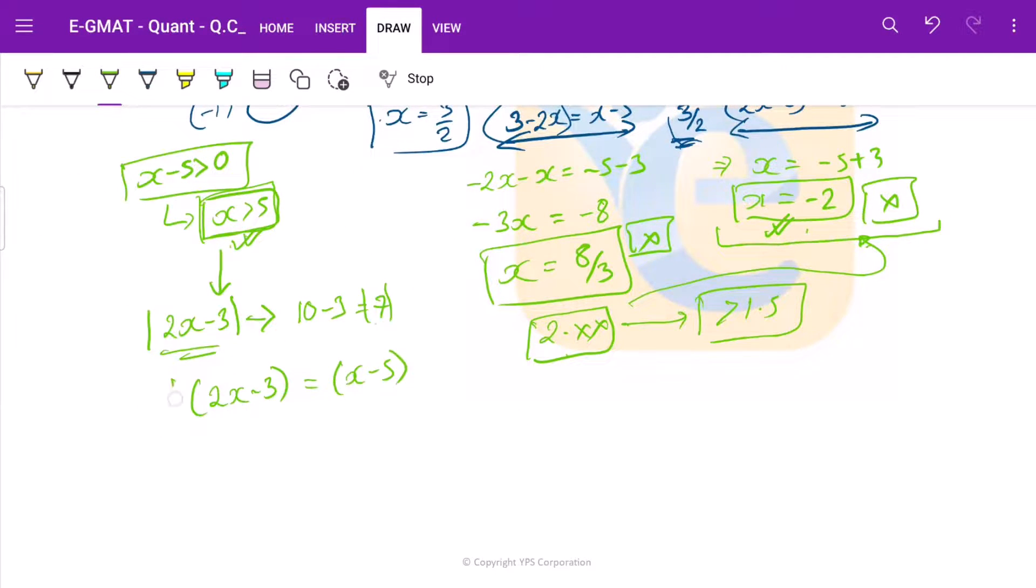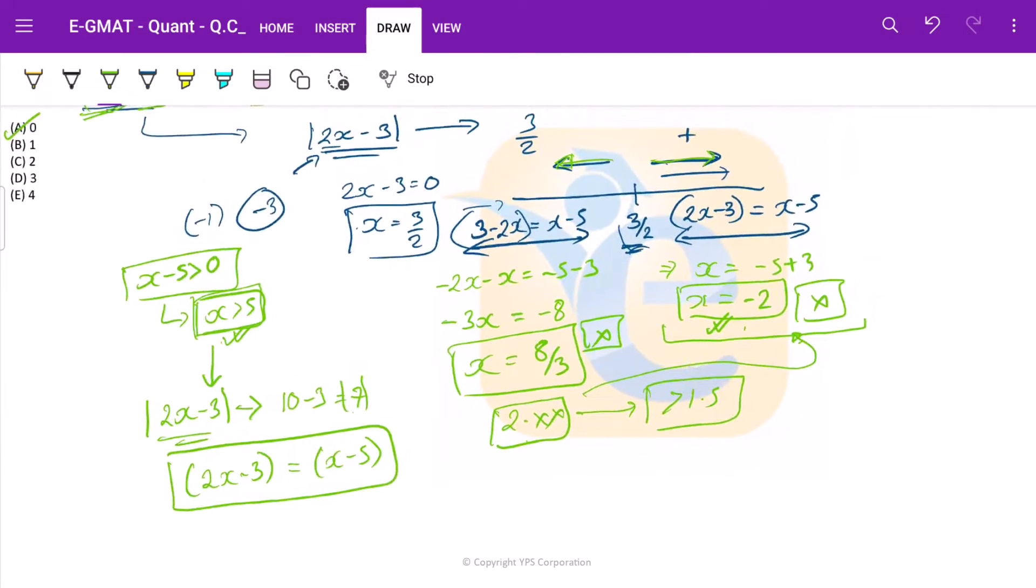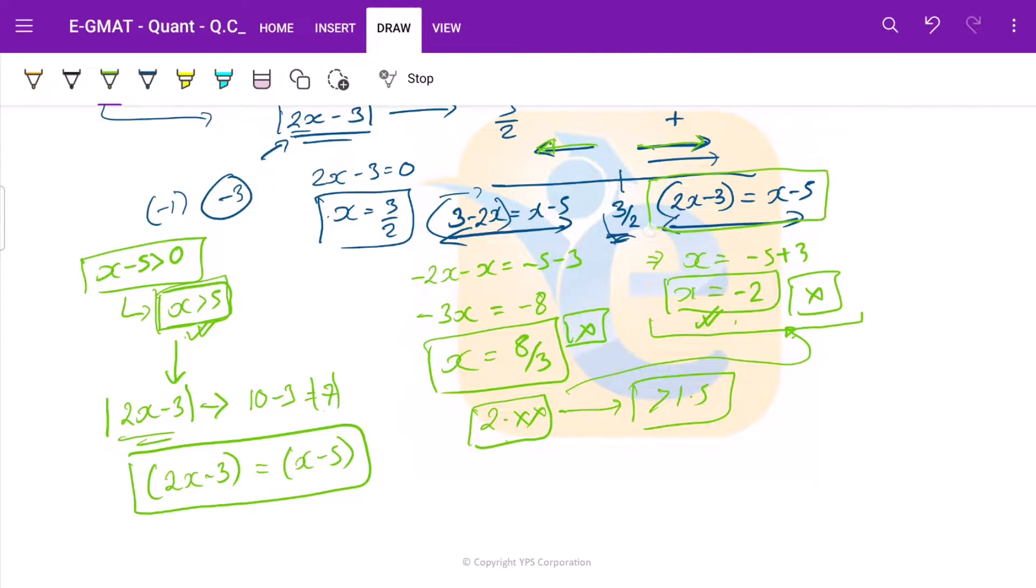This is our equation we have already solved. Now here x was coming as -2 but we have considered x should be greater than 5. There is no solution. So this is also another way to think about it.